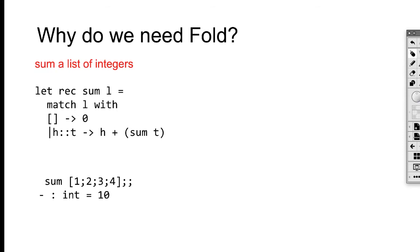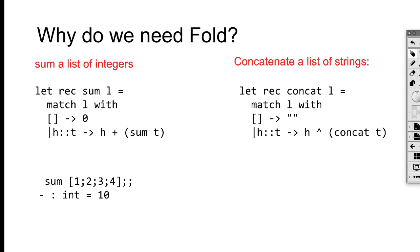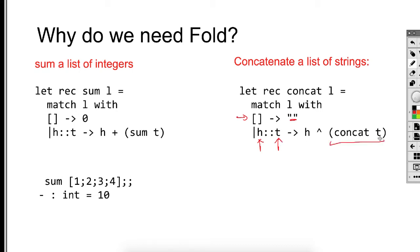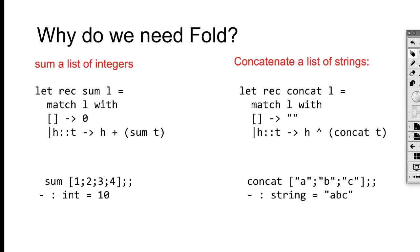If you use it, the sum of one, two, three, four will be ten. Now let's look at another example — concatenating a list of strings. The same match case: if it's empty, we return an empty string. If it's not empty, we deconstruct into head and tail, generate the concatenation of the tail, and add the head at the front. If we apply that to three strings ABC, the result will be the concatenation of ABC.